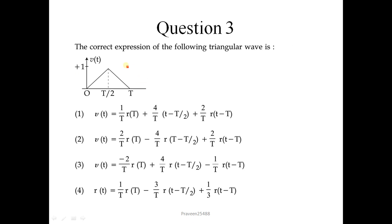Question number 3: The correct expression of the following triangular wave is. Here the triangular wave is given. So we will do analysis of this. To get the first slope which is Y by X, here Y is 1 and X is T by 2. So this slope is 2 upon T. You will get this in the first term.